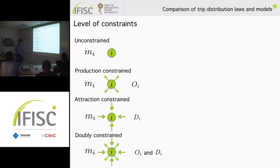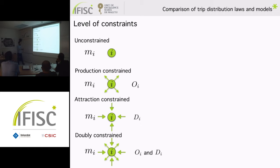In this work we wanted to clearly differentiate the probabilistic laws relating these variables from the constraints used to generate flows between regions, because in previous work this separation was not clear and comparisons were done under unfair conditions — meaning different levels of constraint, i.e., different amounts of information introduced into the model. We define four constraint levels: unconstrained, production constraint, attraction constraint, and double constraint — going from less information to more information introduced into the system.